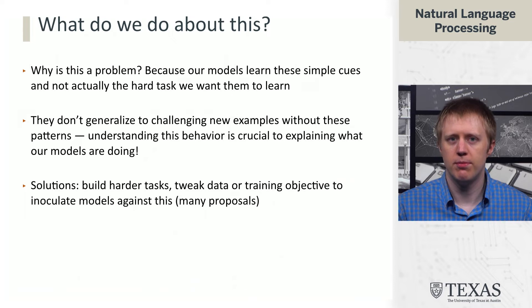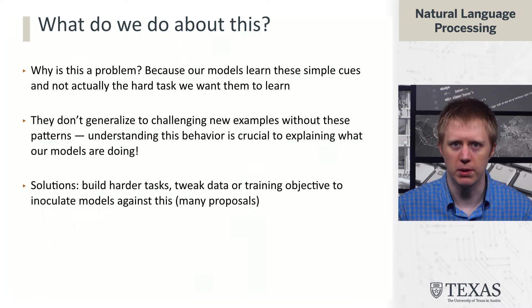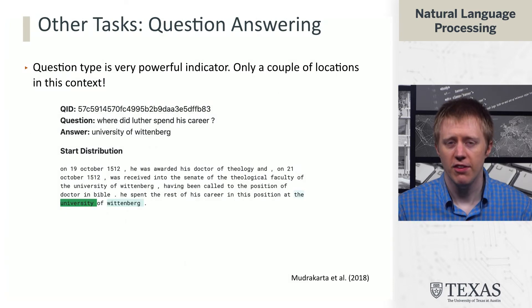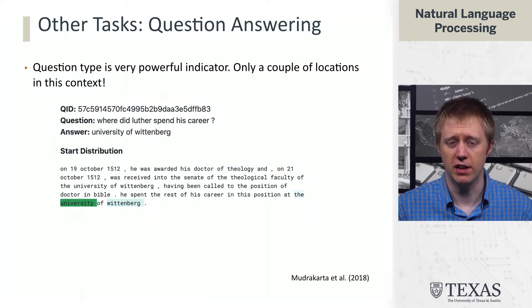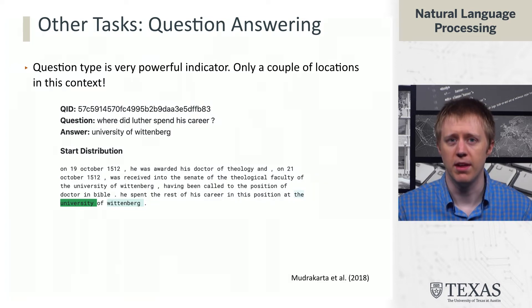This phenomenon is not unique to NLI. In question answering, one of the issues in the SQuAD dataset is that many times there are only a few instances of the right semantic type to be an answer to the question in the context. From a short paragraph, if we ask 'where did Luther spend his career at the University of Wittenberg,' we only see two instances of 'University of Wittenberg' and nothing else that could obviously answer a where question.